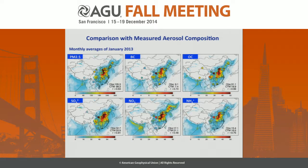We can also compare the measured aerosol composition. Here we compare not just total PM2.5, but also black carbon, organic carbon, sulfate, nitrate, and ammonia. We can see again that for the quarter-degree resolution, the low bias for black carbon and organic carbon is much less. The model also well simulates sulfate, nitrate, and ammonia concentrations. The original model simulation has a low bias for sulfate concentration, as Yuxuan has discussed.